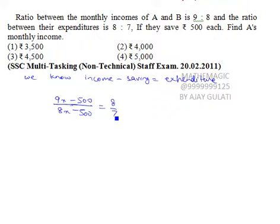The ratio of their expenditure is 8 by 7. In one way, we will put direct shortcut here. How much is this? 7 into 9, 63x minus 3500 is equal to 64x minus 4000.